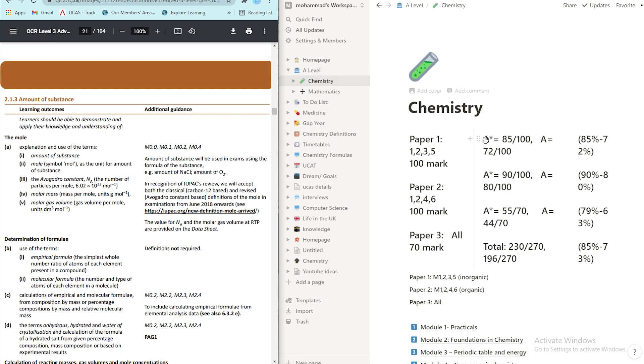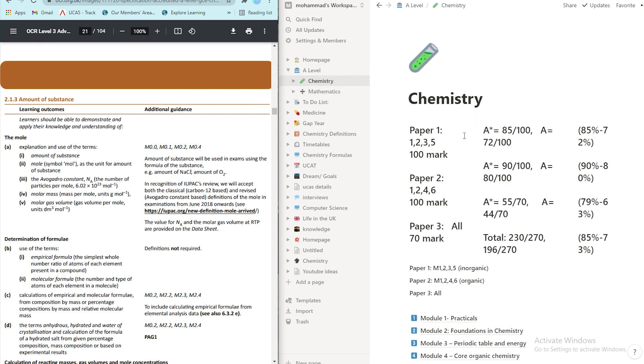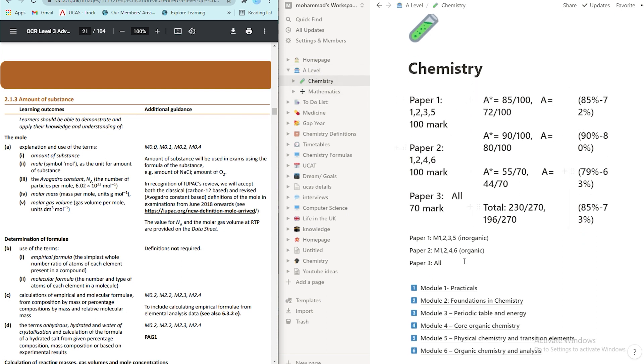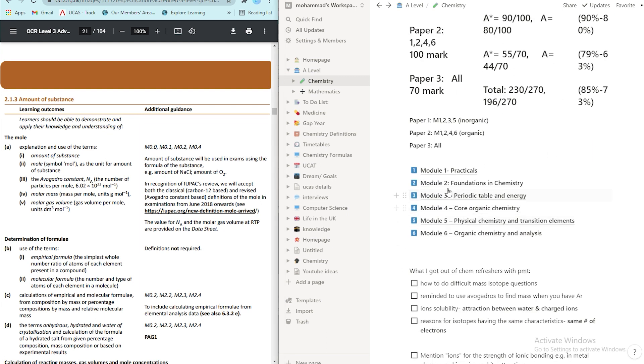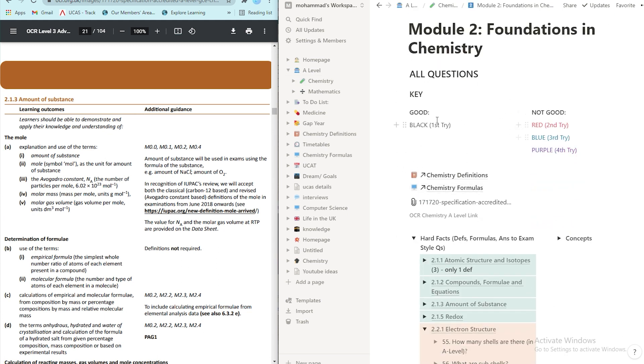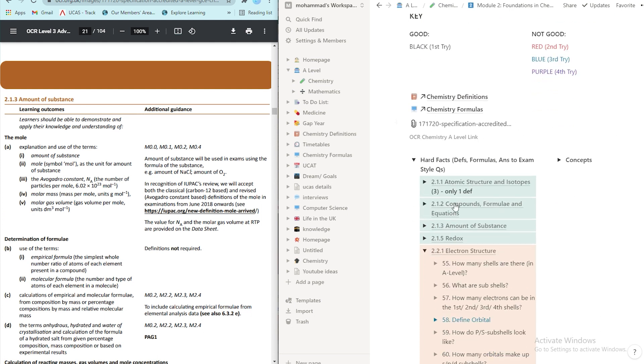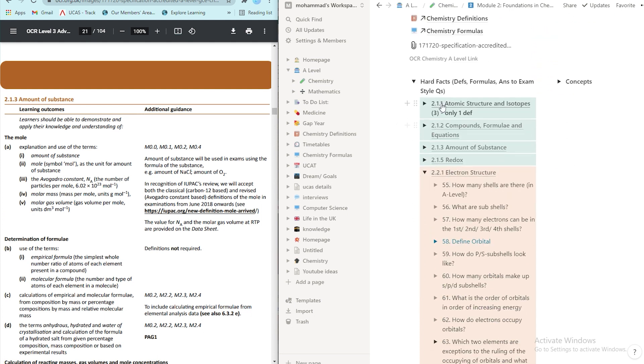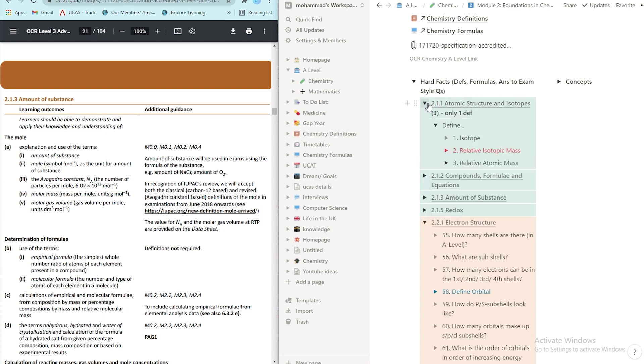Here we have my home page. Well, my chemistry home page. And this is everything customizable. So if you want to see how to customize it, you can just go on YouTube how to use Notion. But we'll go with Module 2. And as you can see, I have a key here, which is pretty important. And I'll talk about it later on. So here, when we go on the first one, 2.1.1 atomic structure isotopes, if you toggle it down, you can see it says define. And I've got three questions.